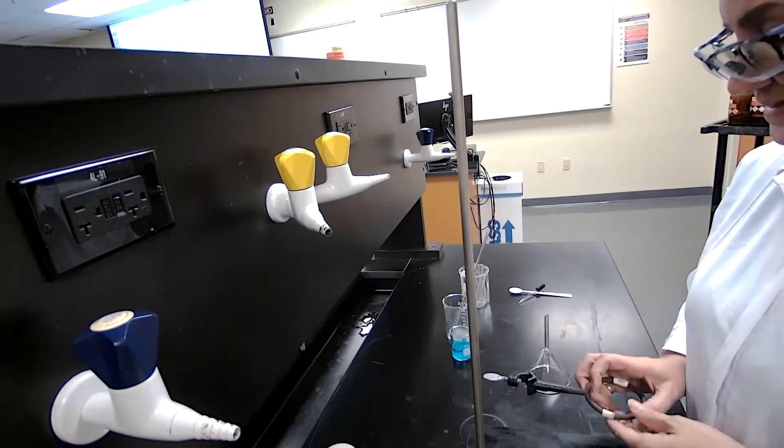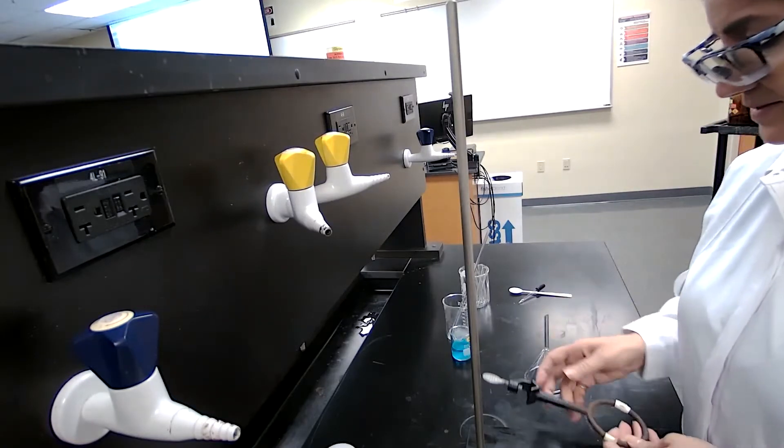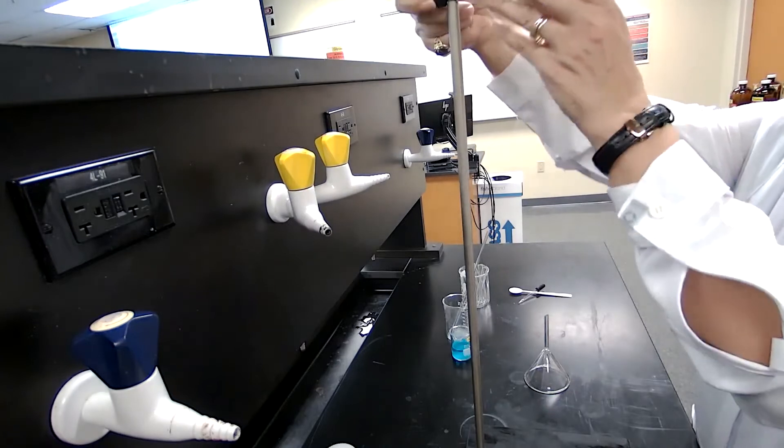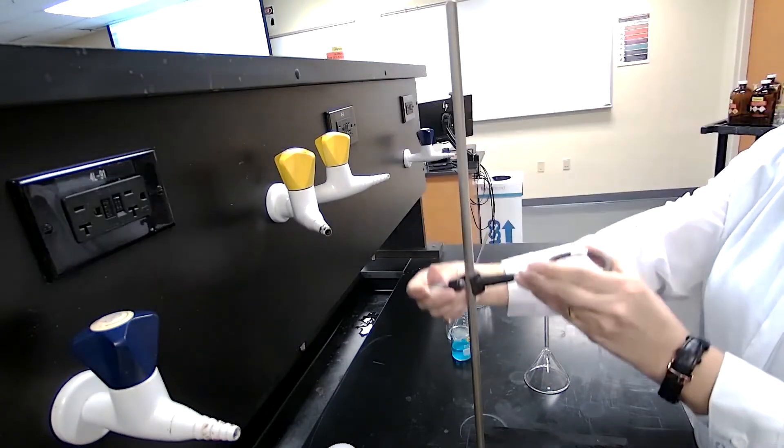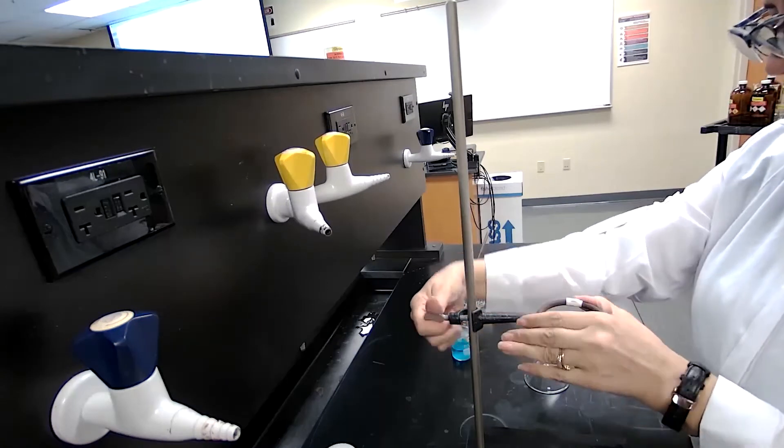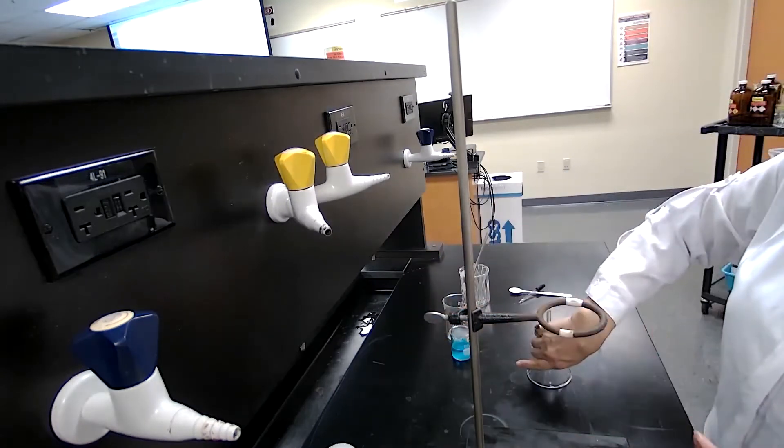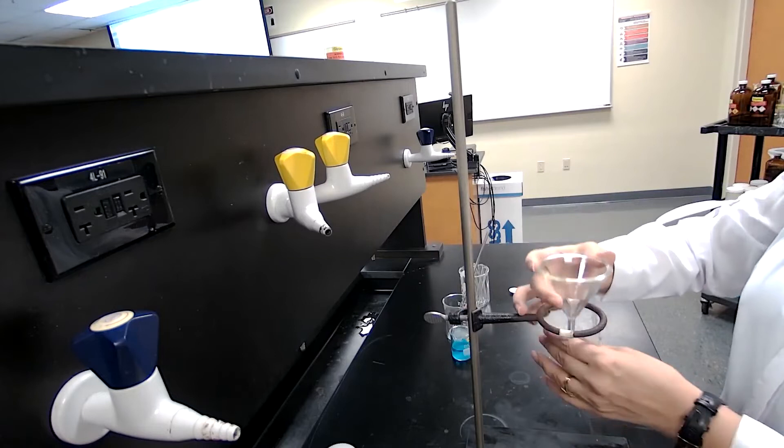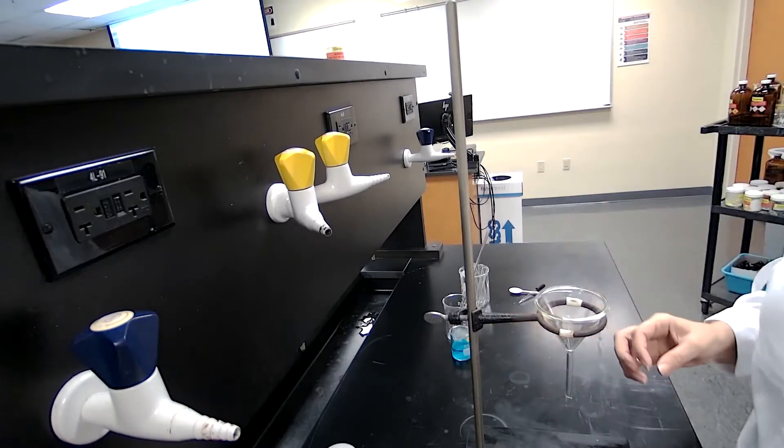For setting up the gravity filtration, we are going to use a small iron ring to attach to a ring stand. This is a support for a glass funnel that we are using for the filtration.